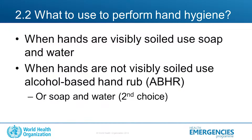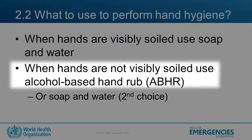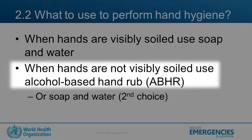What agents should one use to perform hand hygiene? If the hands are visibly soiled, you should always use soap and water. However, if they are not dirty or soiled, then alcohol-based hand rub is the preference.